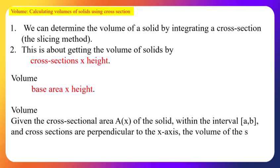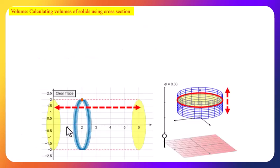Given the cross-section area A of a solid within the interval [a, b], where cross-sections are perpendicular to the x-axis, the volume of the solid is the integral from a to b of A dx. Here, dx represents the thickness of each slice along the length of the object. If collecting disks along the y-axis, we integrate with respect to y instead.